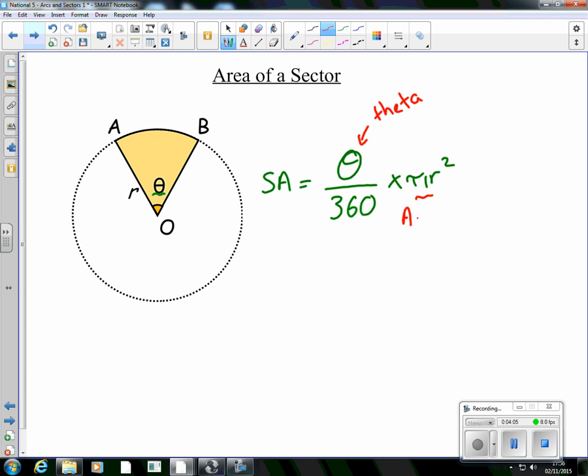That there, that is the area of a whole circle. That theta is the angle. And because it's out of a total of 360, that bit there, that's the fraction we have. So it's a fraction of the area of a circle. Now that's going to be the first start of your note. So if you could copy that down for me, and we'll do a couple of examples, and then we'll let you try a couple and move on.